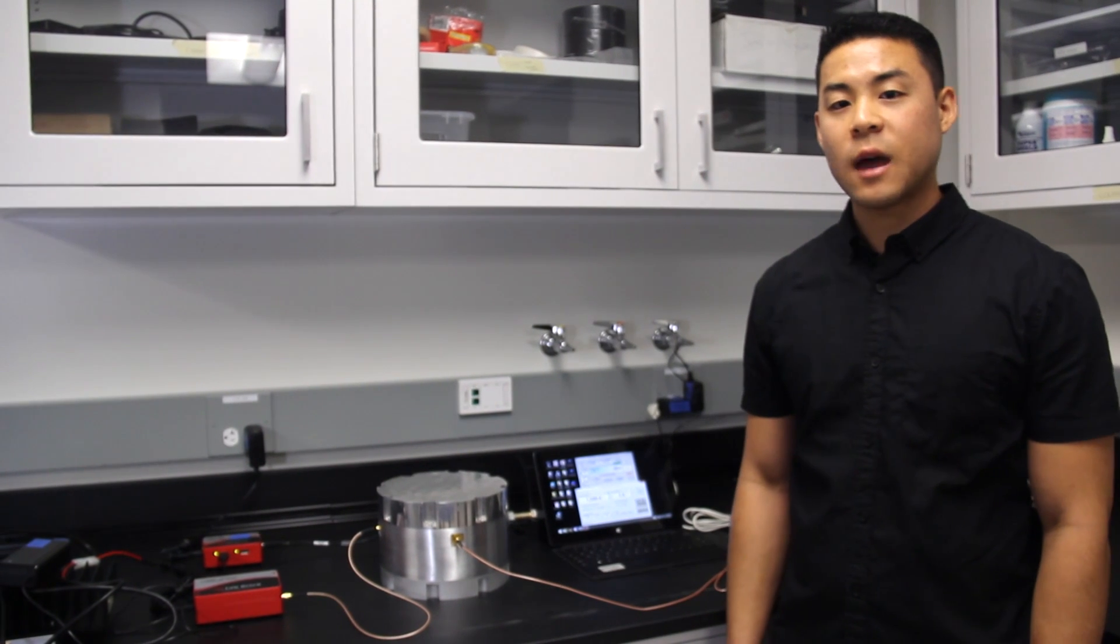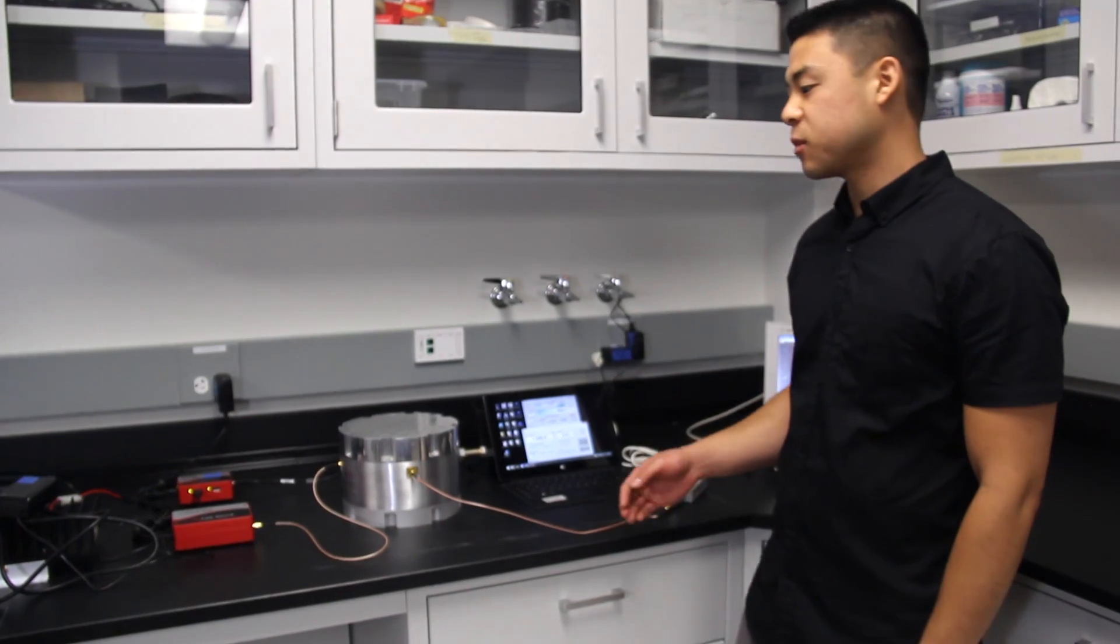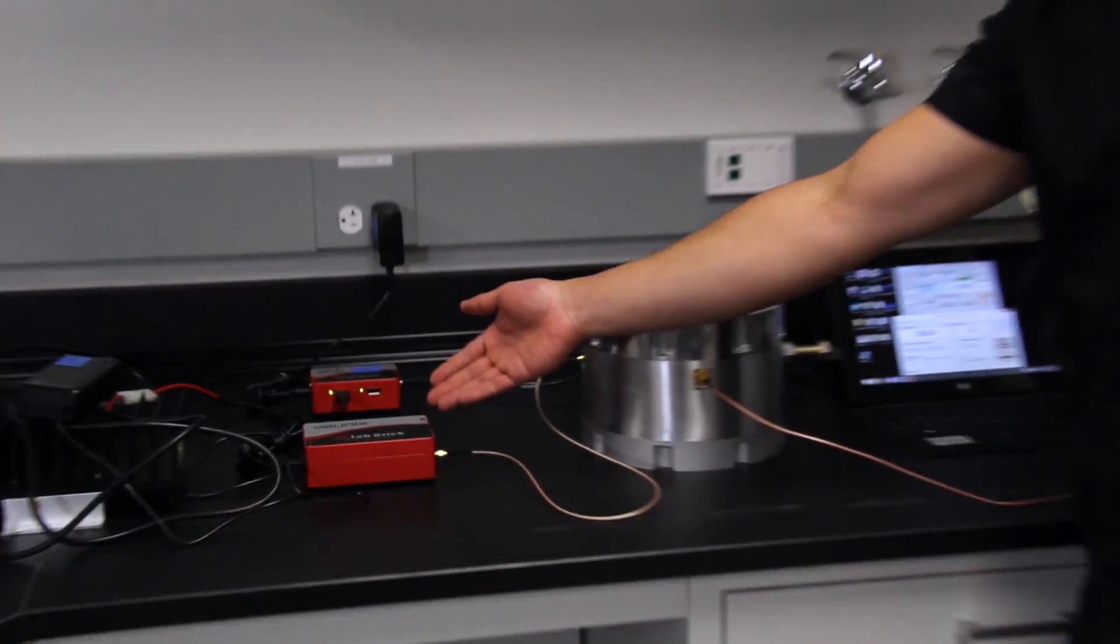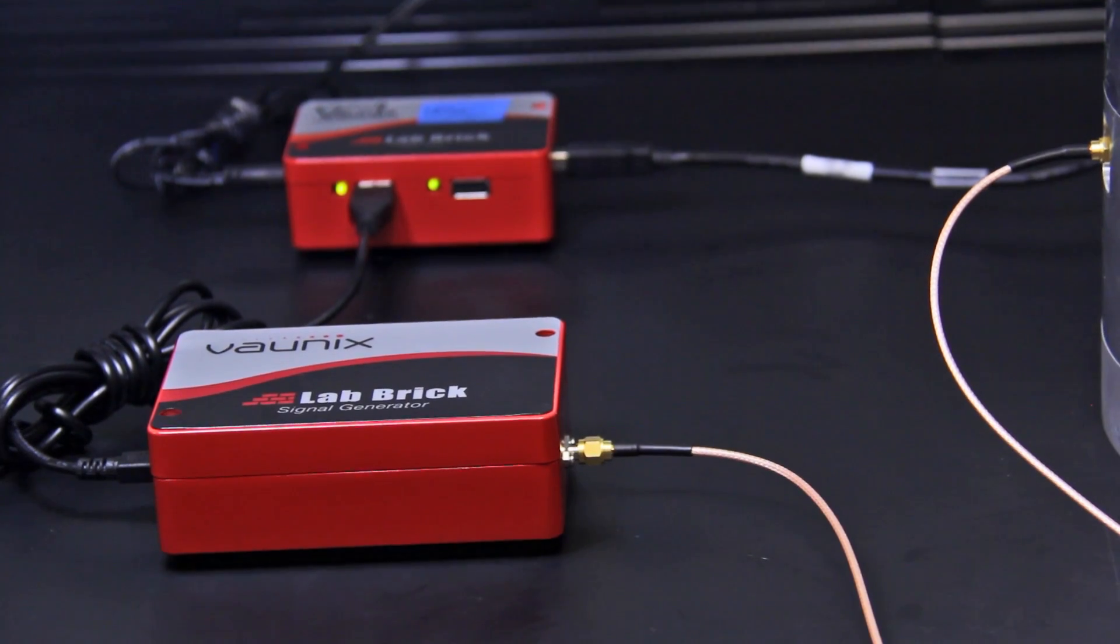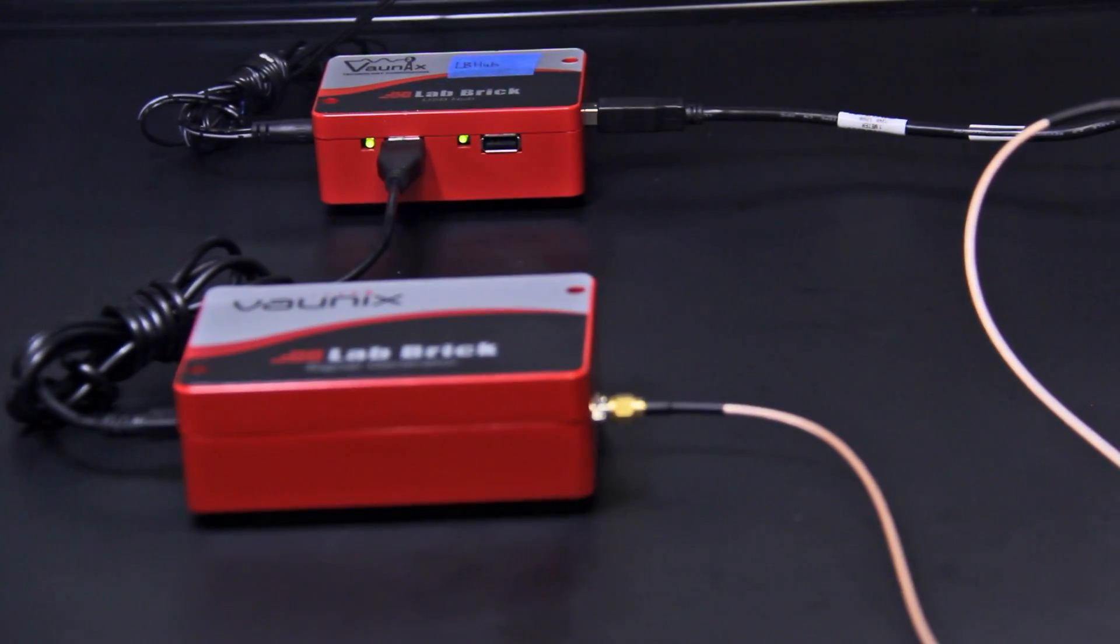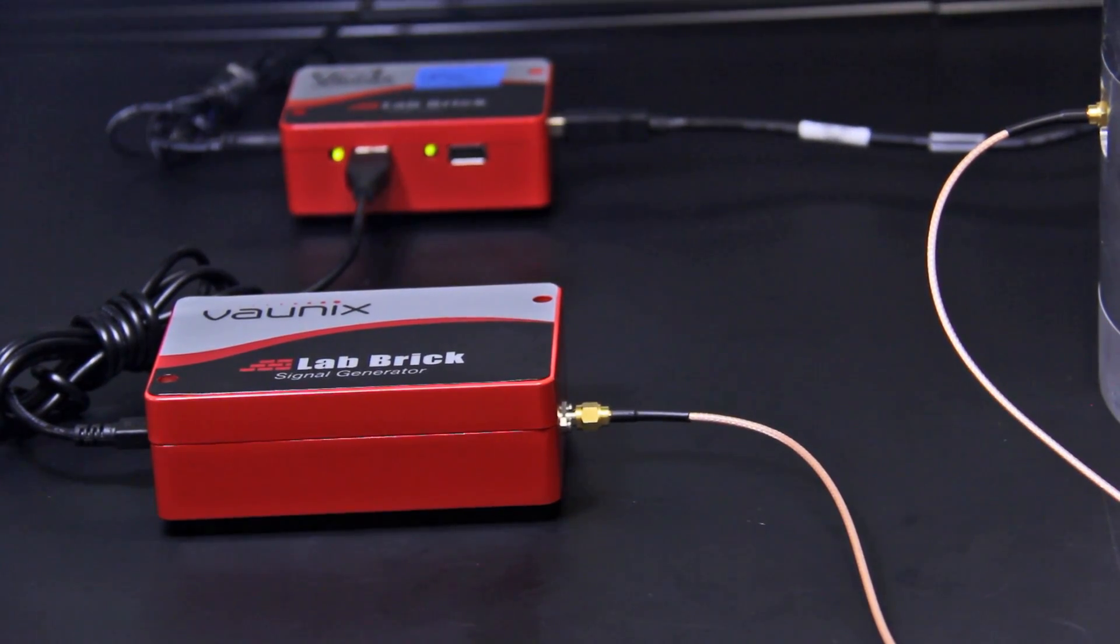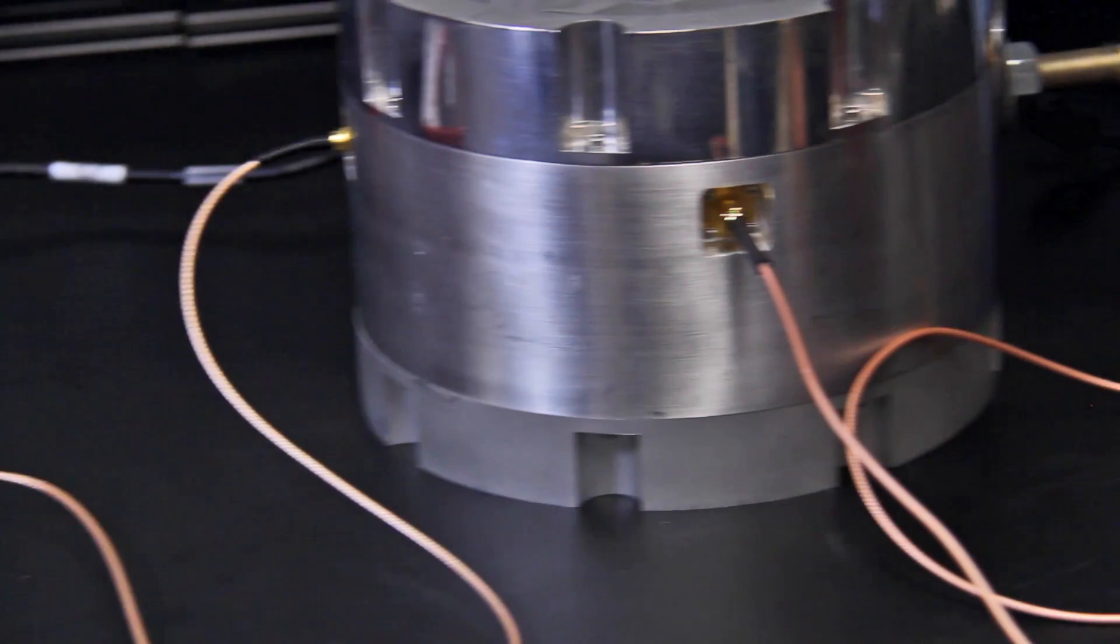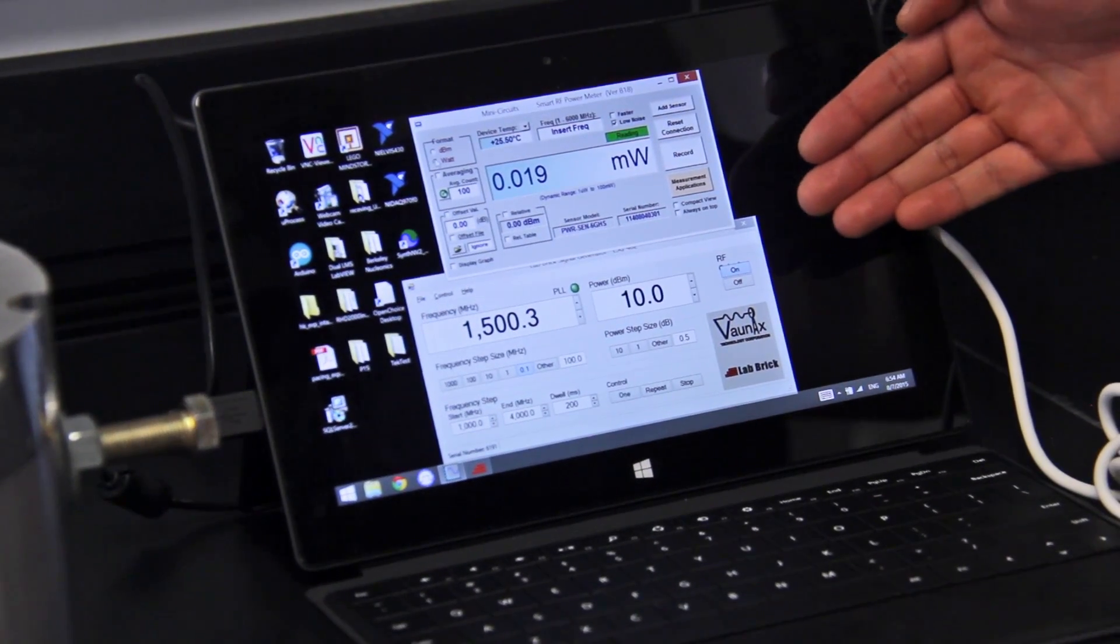Thanks. Now we'll generate the signal to send into the power amplifier. The signal generator system we have here is the Lab Brick powered by Vaunix. There's a simple to use Windows interface where you can control the frequency and power of the signal generator. There's an equally easy to use LabVIEW VI to do the same thing in MATLAB. Here, you can see I have set the frequency to 1.5 GHz and a power of 10 dBm.